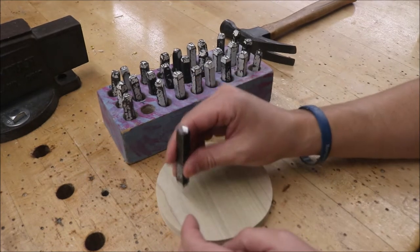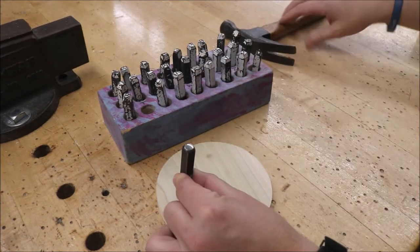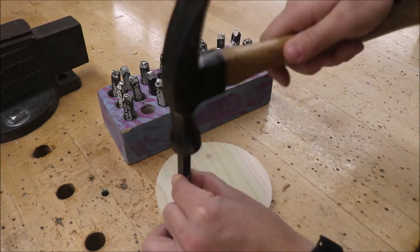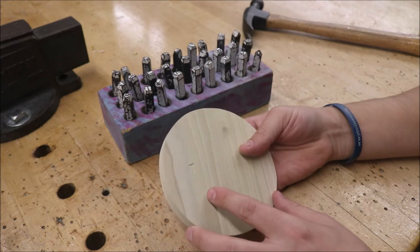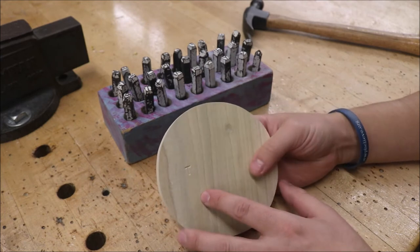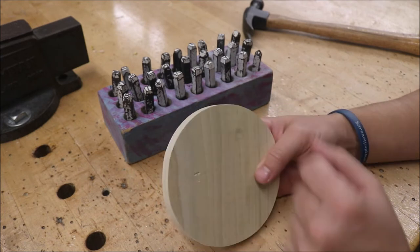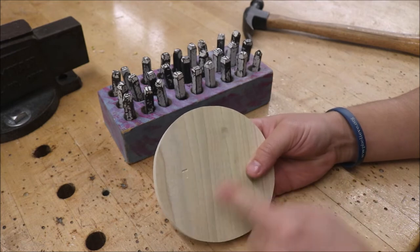So all that you do is you put it on top of the piece of wood, take your hammer, hit it a few times, and then it should leave you with the letter or number, letter in this case, on your project. So you're going to do that with your first and last name.